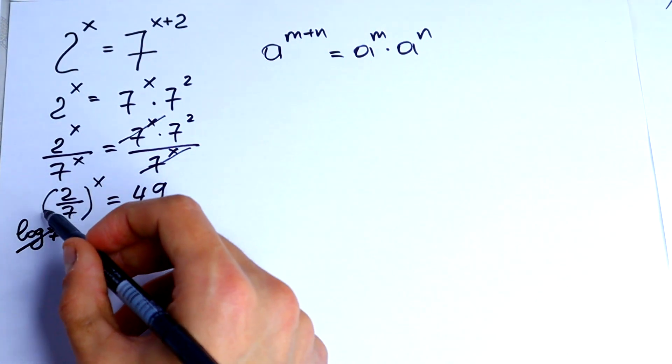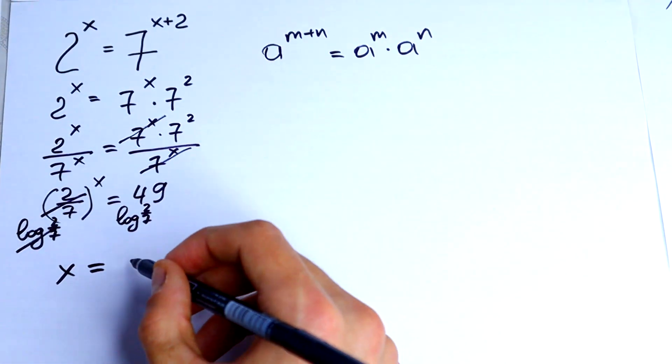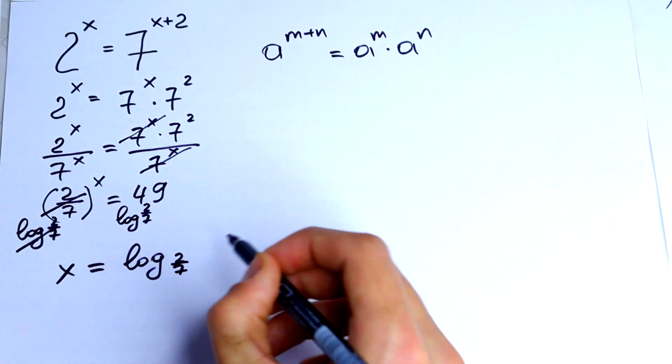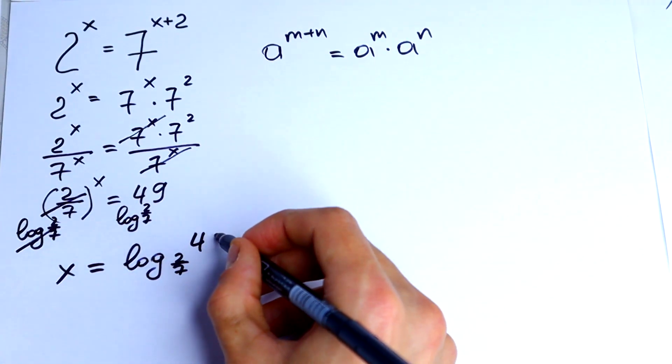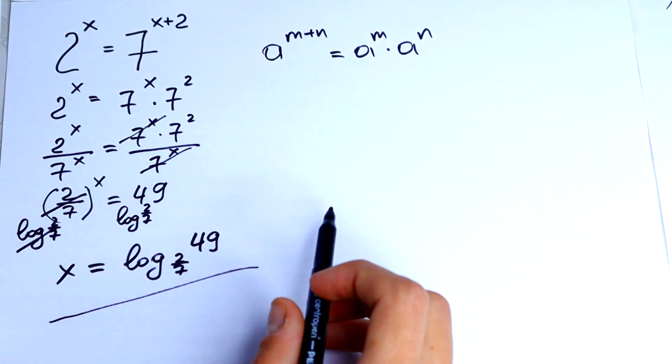We know that this we can cancel and x will be equal to log base 2 over 7 of 49. And this is the answer.